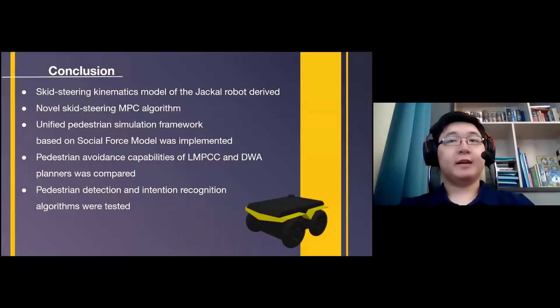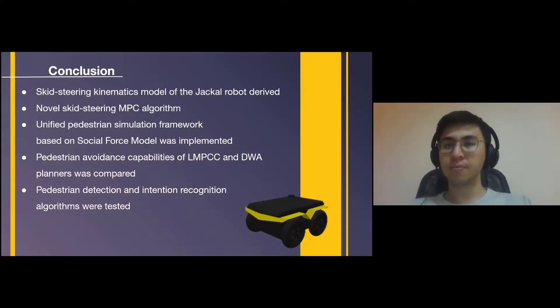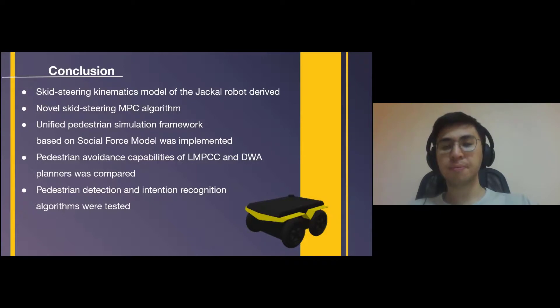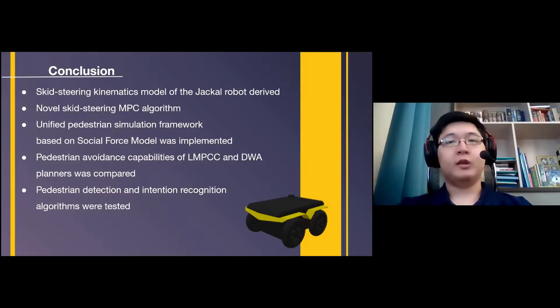At the end of our project, the following goals have been achieved. Firstly, the Skid Steering Kinematics model of the Jackal robot was developed and was used in an optimization problem. A novel Skid Steering MPC algorithm was designed and implemented within our pedestrian simulation framework. MPC can perform trajectory following and can be modified to counteract the slippage and skidding. Secondly, we have developed a pedestrian simulation framework based on the social force model in Gazebo robotic simulator. This allowed us to create complex, realistic pedestrian-rich environments for testing perception and navigation algorithms. And finally, pedestrian detection algorithms were tested on the robot using existing navigation algorithms such as DWA and LMPCC based local planners. After tests, it was found that DWA cannot predict human intentions and plan accordingly due to its design limitations, while LMPCC based local planner has proven to perform well in human present environment.